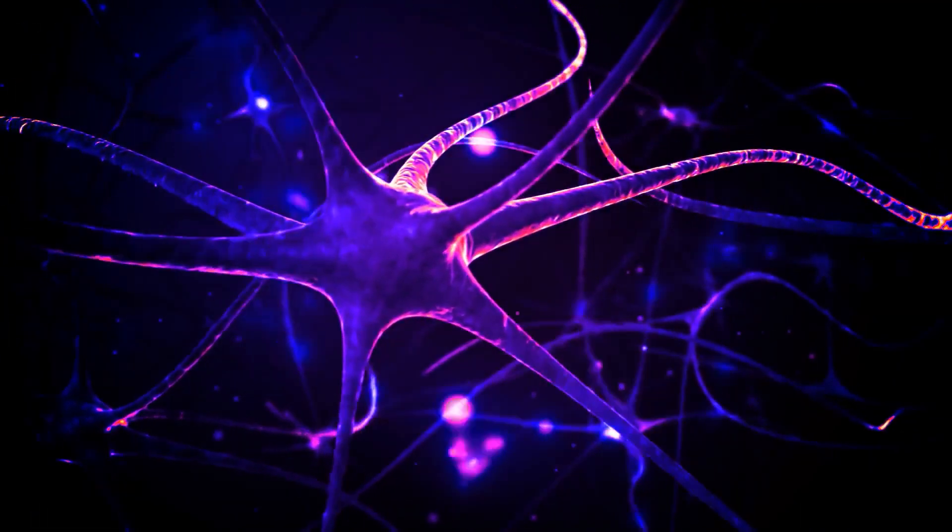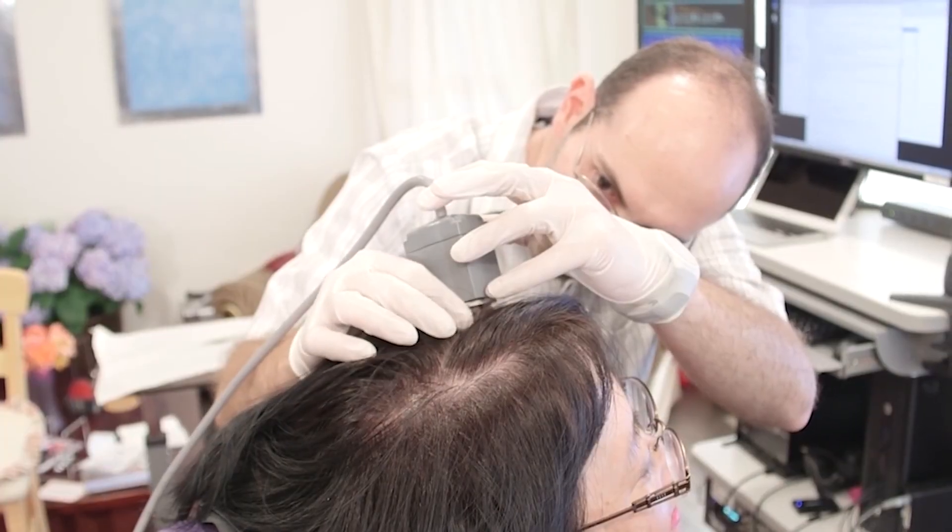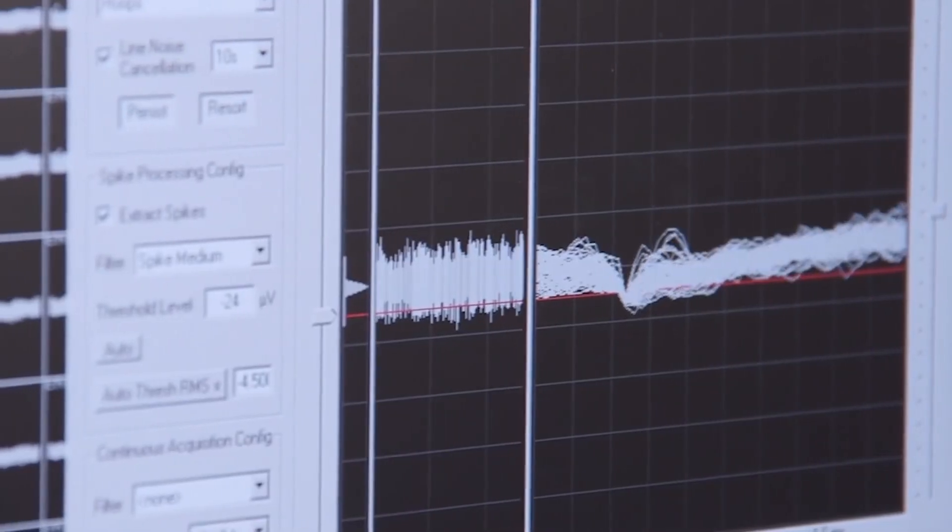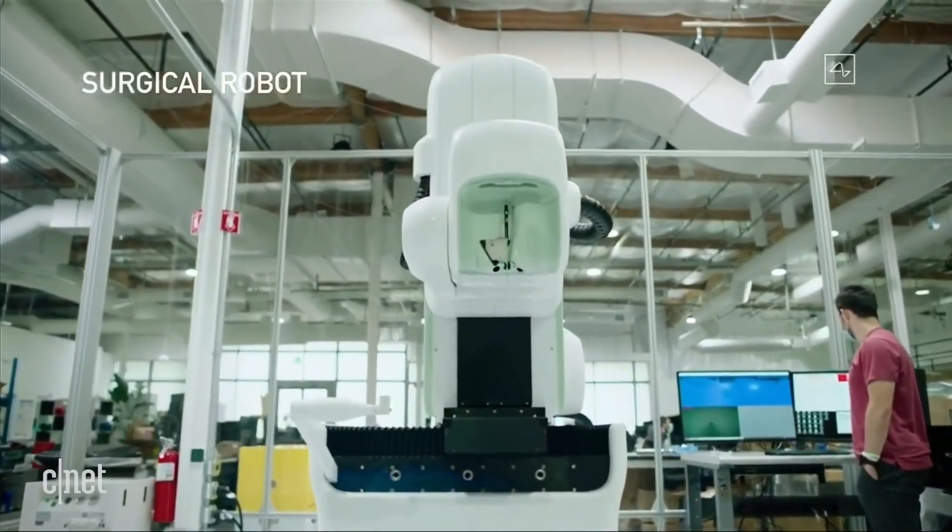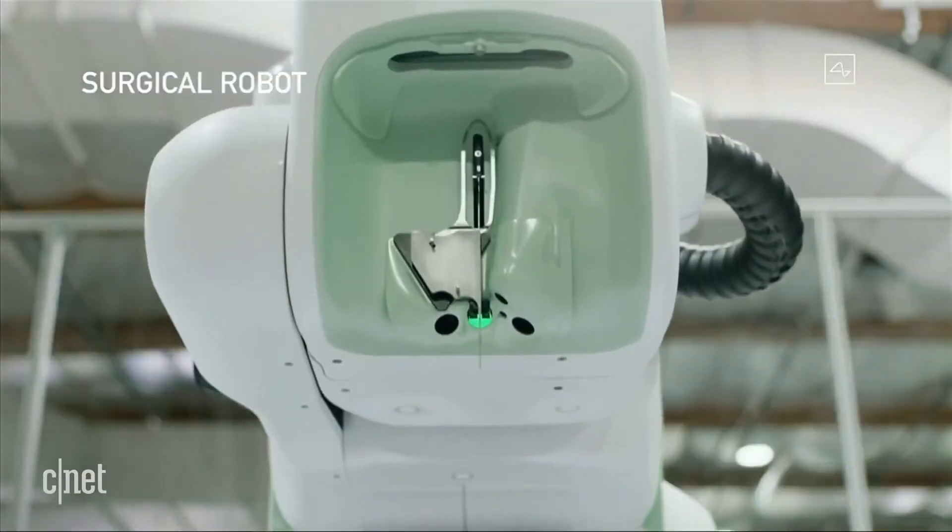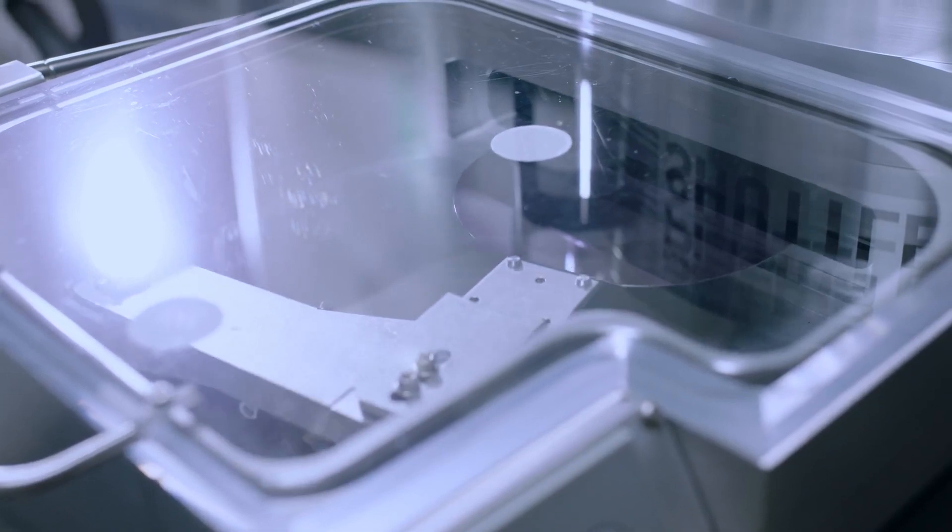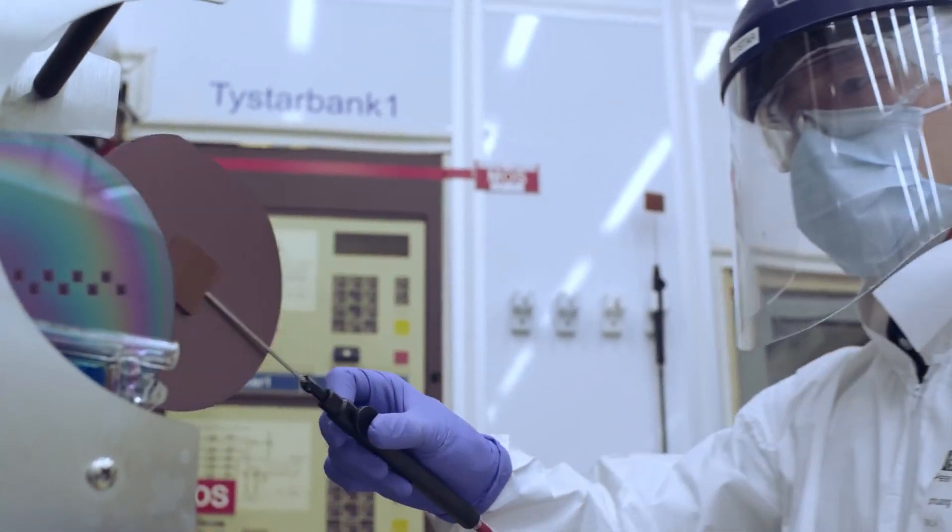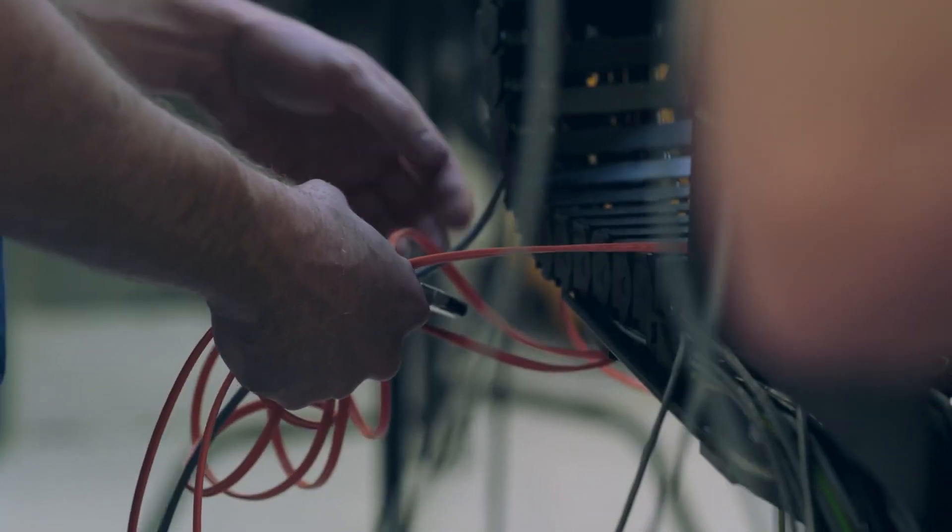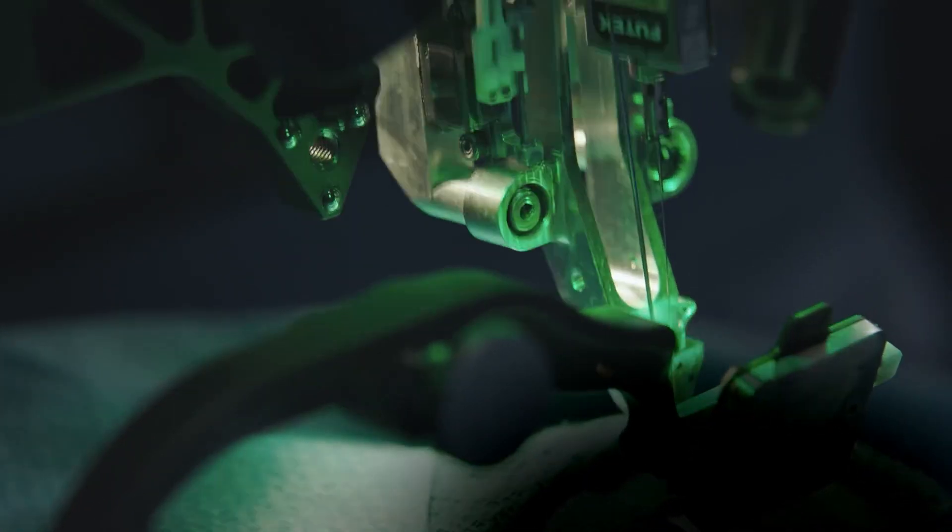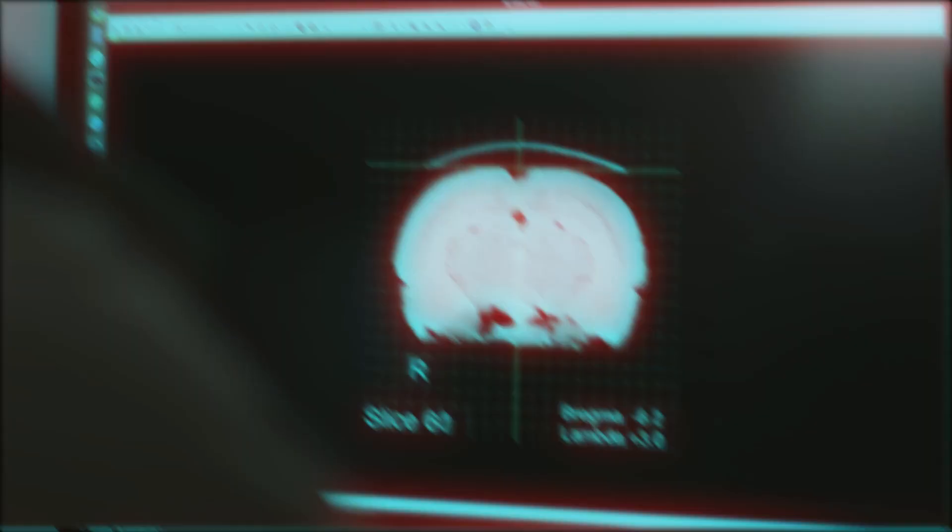Another challenge is developing a method for implanting the electrodes in the brain that is both safe and effective. Neuralink is exploring several innovative implantation techniques, including using robots to perform the procedure and minimize damage to the brain tissue. It is important to note that Neuralink's work is still in its early stages, and many technical and scientific challenges must be overcome before their brain chips become a reality. However, the potential benefits of BCIs, including improved physical and cognitive abilities, are exciting, and Neuralink is at the forefront of this emerging field.